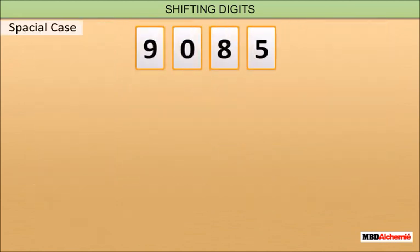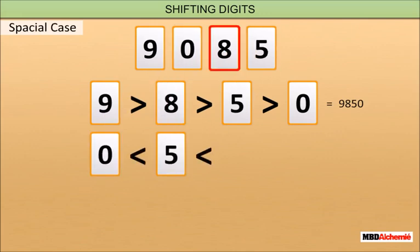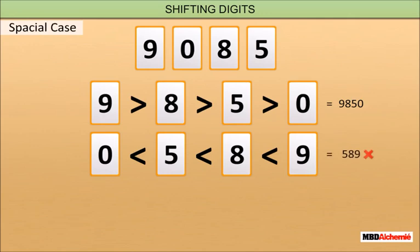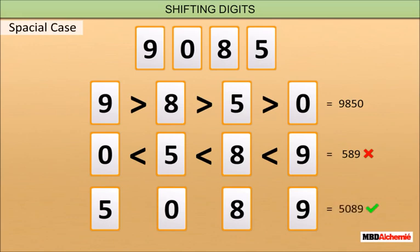As a special case, suppose we have the digits 9, 0, 8, and 5. If we arrange them in decreasing order, we get the largest four-digit number, which is 9850. Now, what is the smallest number of 4 digits? If we arrange the numbers in increasing order, we have 0589. But this is a three-digit number. So, we interchange 0 and 5. This gives 5089, and this is the smallest 4-digit number.